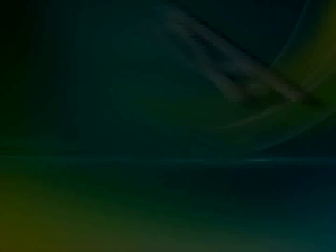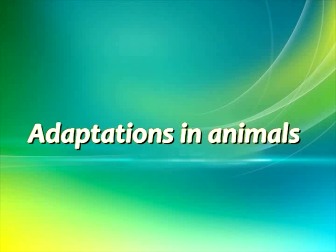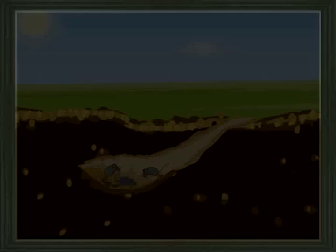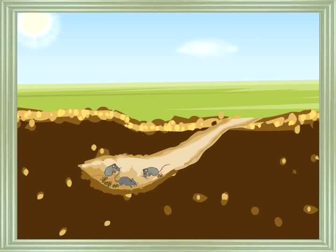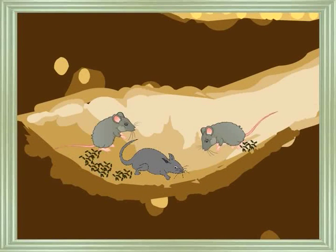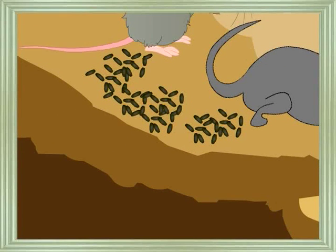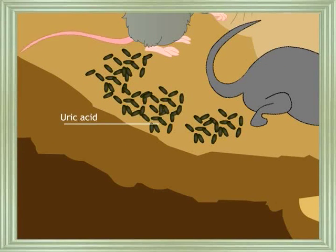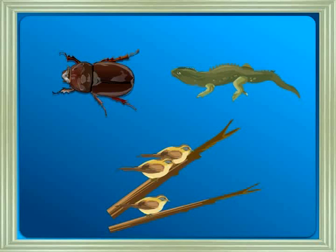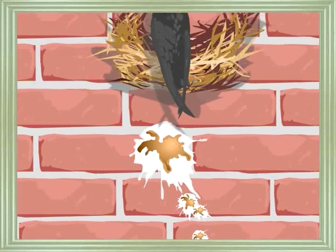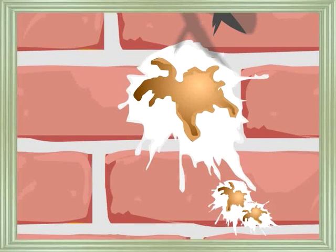In areas where there is water shortage, animals have adapted to live in burrows. They consume food which has more fat. The excretory product is uric acid in the form of pellets, so no water is lost. This is observed in many invertebrates, reptiles, and birds. The excreta of birds has white pellets and brown pellets — the white pellet is the nitrogenous waste and the brown material is the undigested food.